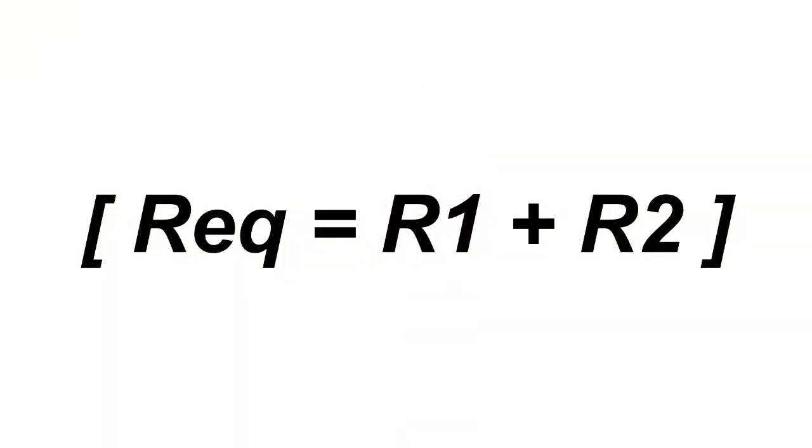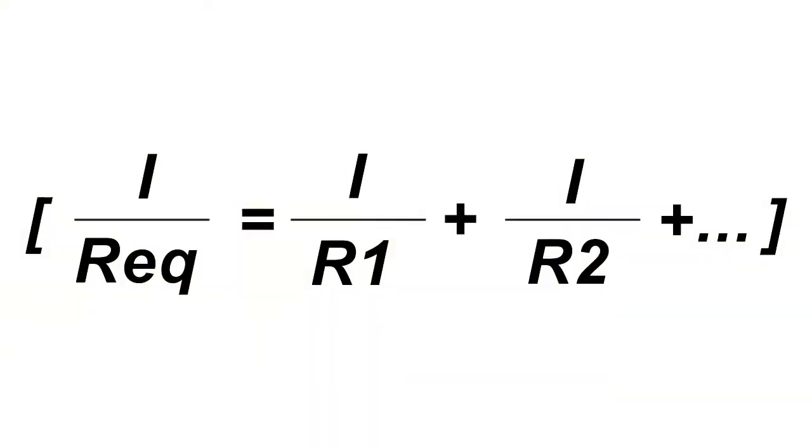To find the R equivalent of resistors in a series, we just add the resistances together: R equivalent equals R1 plus R2. For resistors in parallel, we use a different method — one that gives an equivalent resistance smaller than any of the individual resistors in the branches. The resistance equivalent equals resistance 1 plus resistance 2.